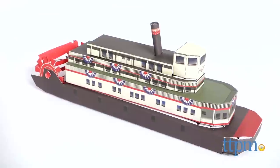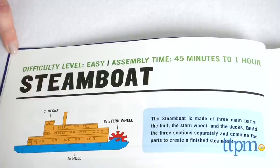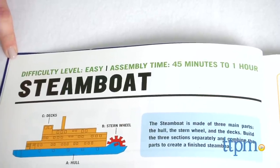The easiest model in the book, the steamboat, will take anywhere from 45 minutes to 2 hours to complete, depending on your skill level at paper crafting.